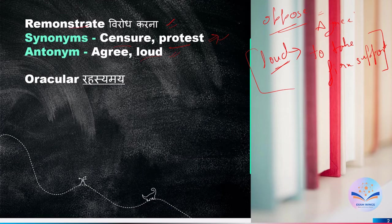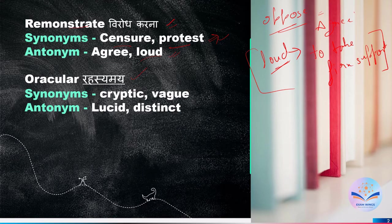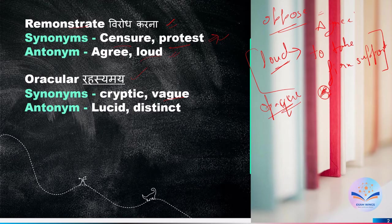'Oracular' means mysterious or cryptic, i.e., vague — something that is not clear. We have previously read the word 'opaque' O-P-A-Q-U-E, which also means things we don't see clearly. So oracular O-R-A-C-U-L-A-R means there is no clear thing. Synonyms are 'cryptic' C-R-Y-P-T-I-C and 'vague' V-A-G-U-E — not specified, something not clear.